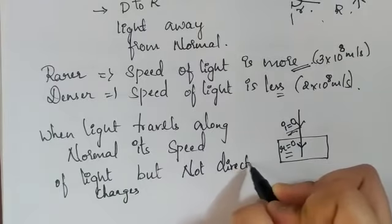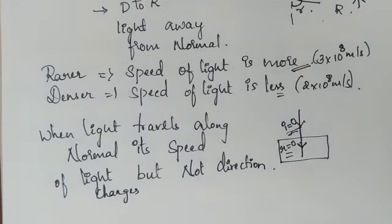Direction won't change; it remains as it is when light travels along the normal line. Speed of light changes. Why?